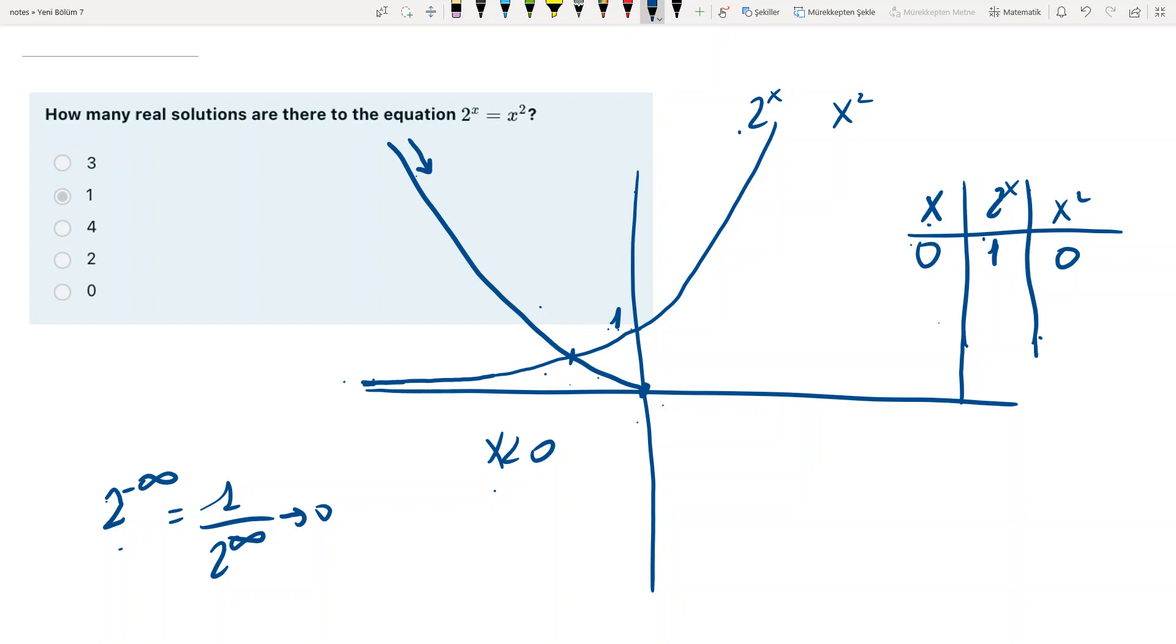When x is 1, 2 to the x is 2, x squared is 1. When x is 2, 2 to the x is 4, x squared is 4, first intersection on the positive side.